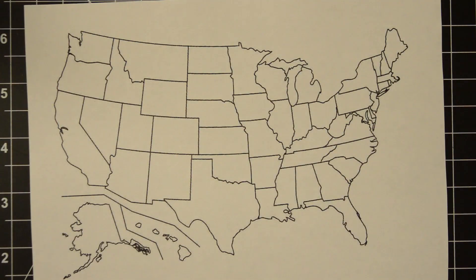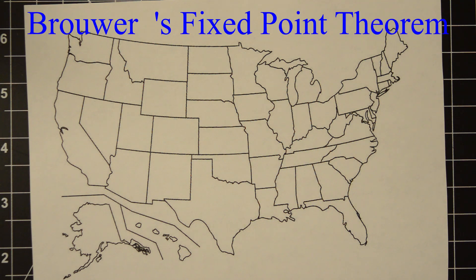So this is a map of the United States, and we're going to use this to study something called Brouwer's Fixed Point Theorem.